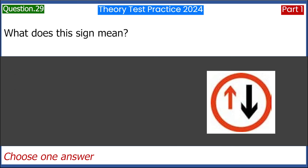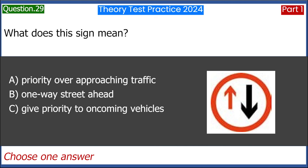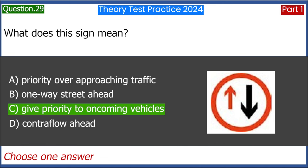What does this sign mean? A. Priority over approaching traffic. B. One-way street ahead. C. Give priority to oncoming vehicles. D. Contraflow ahead. Answer: C. Give priority to oncoming vehicles.